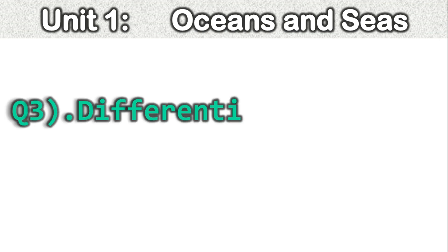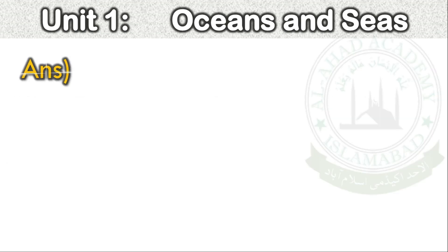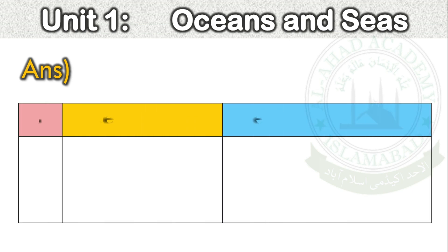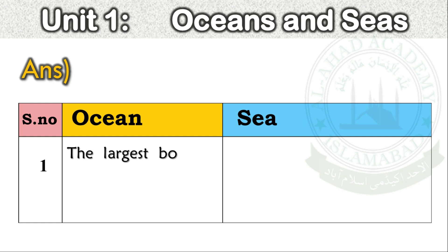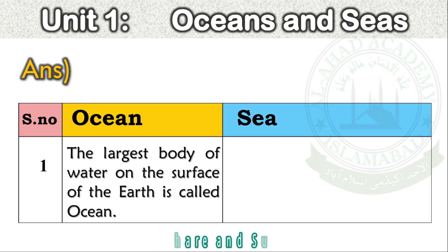Question number 3. Differentiate between ocean and sea. Answer — Ocean: The largest body of water on the surface of the earth is called ocean.